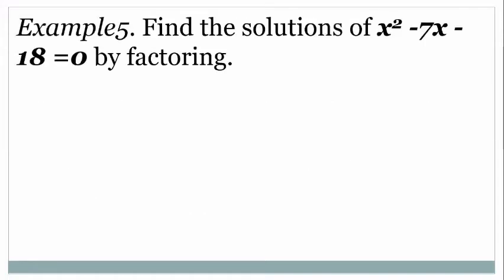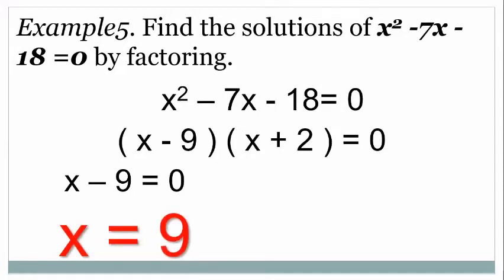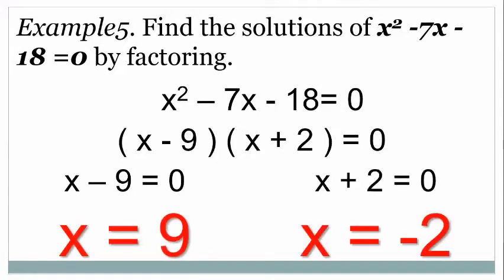Find the solutions of x squared minus 7x minus 18 equals zero by factoring. We find two factors: negative 9 and positive 2, since (−9)(2) = −18 and −9 + 2 = −7. So (x − 9)(x + 2) = 0. Applying the zero product property: x − 9 = 0 gives x = 9, and x + 2 = 0 gives x = −2. These are the solutions of x squared minus 7x minus 18 equals zero.